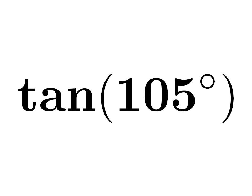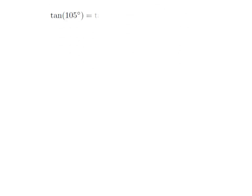In this video, we are going to find the value of tangent of 105 degrees. 105 degrees is equal to 60 degrees plus 45 degrees. So, tangent of 105 degrees is equal to tangent of 60 degrees plus 45 degrees.